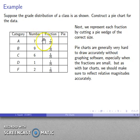So, this 7 25ths, that's going to look like a piece like, well, I'll draw it in some amount, and 9 25ths is a slightly larger piece, 6 25ths is a smaller piece, 1 25th is a very small piece, and 2 25ths is going to be another piece of some particular size.